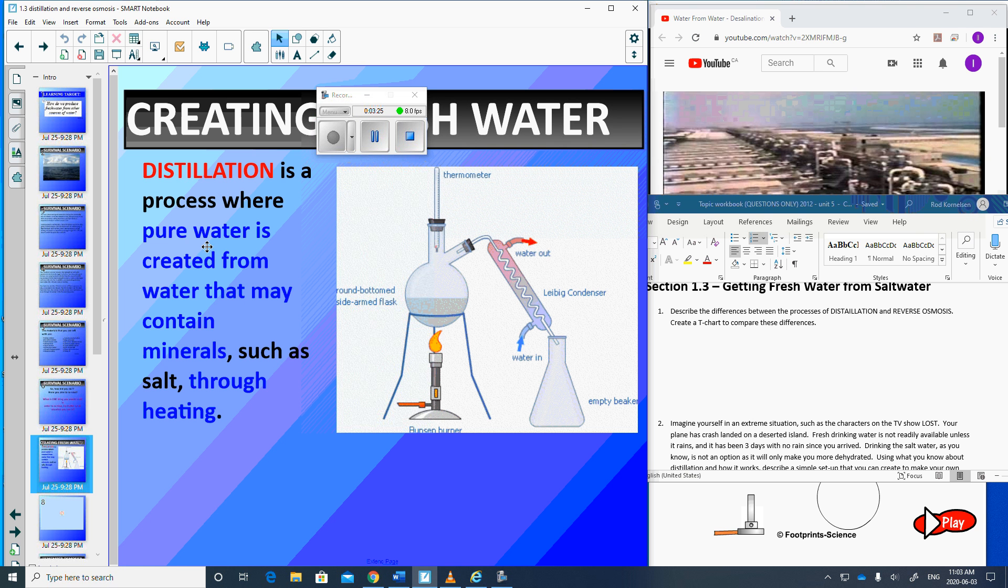Distillation is a process where pure water is created from water that may contain minerals, such as salt, through heating. So the key to remember here that I keep coming back to over and over is that we don't get fresh water from salt water just by heating salt water. When we heat salt water, we get hot salt water. It's not like heating it makes the salt go away.